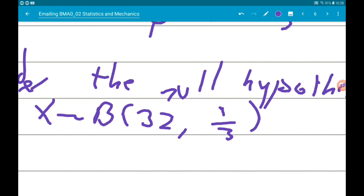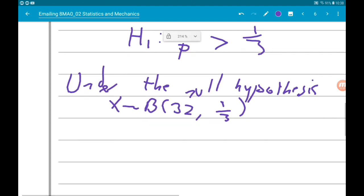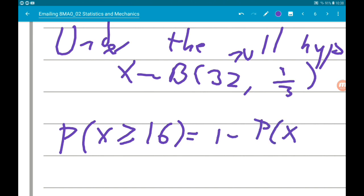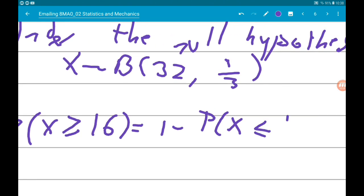What we're seeing is whether it's more or less likely than 5%, with probability still at one third. If it's more likely than 5%, we accept H₀. If it's less than 5% likely, we reject H₀ and accept H₁. So we want the probability that x is greater than or equal to 16, which is one minus the probability that x is less than or equal to 15.